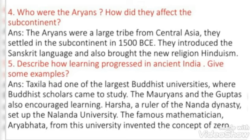Question number 5: Describe how learning progressed in ancient India. Give some examples. Taksila had one of the largest Buddhist universities where Buddhist scholars came to study. The Mauryans and the Guptas also encouraged learning. Har Shah, a ruler of the Nanda dynasty, set up Nalanda University. The famous mathematician Aryabhata from this university invented the concept of zero.